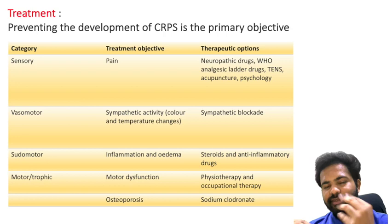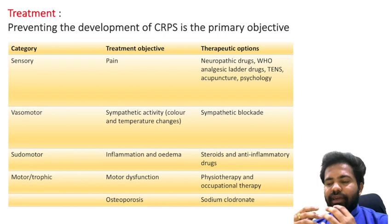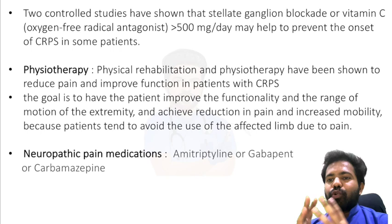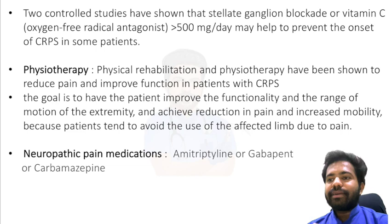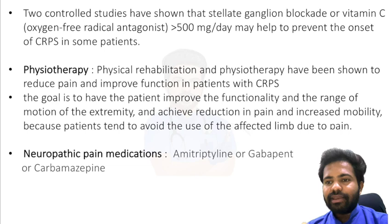For vasomotor changes due to sympathetic activity, sympathetic blockade can be performed. For pseudomotor changes with inflammation and edema, steroids and anti-inflammatory drugs are given. For motor or trophic changes, physiotherapy and occupational therapy are essential, and for developing osteoporosis, sodium clodronate or bisphosphonates can be given. Studies have shown that stellate ganglion blockade or vitamin C (acting as an oxygen free radical antagonist) at more than 500 mg per day can help prevent the onset of CRPS in some patients.